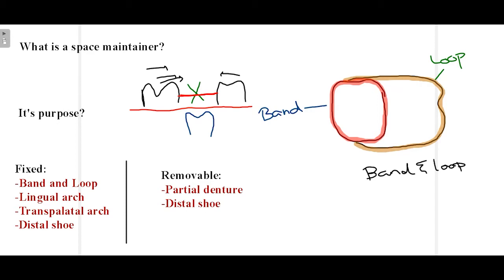Now classifying space maintainers: they can be either fixed or removable. For fixed we have band and loop, lingual arch, transpalatal arch, and distal shoe. For removable we have partial denture and distal shoe. We will discuss each of them in a short while.